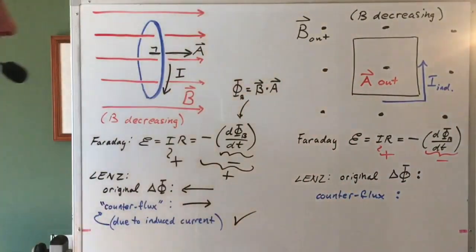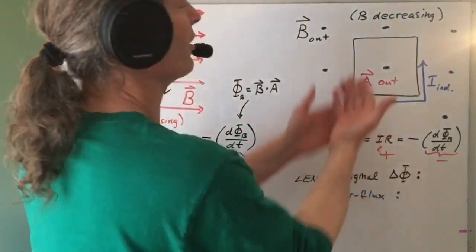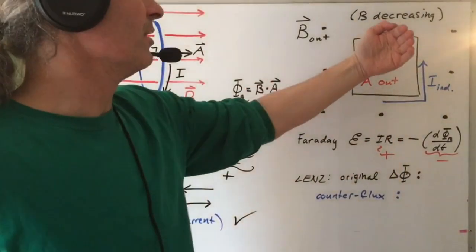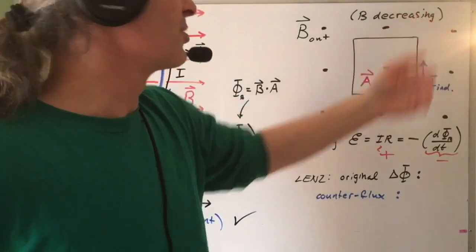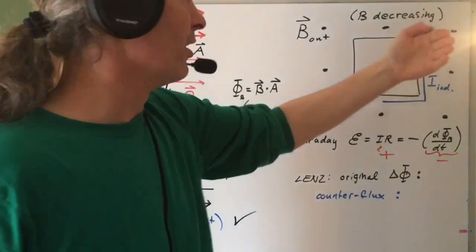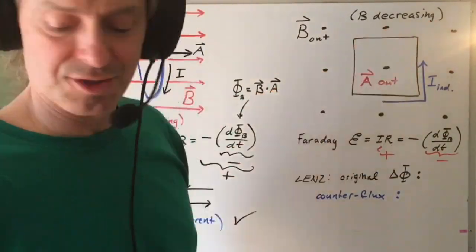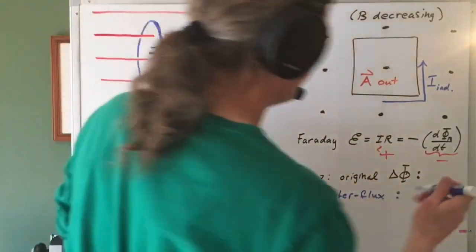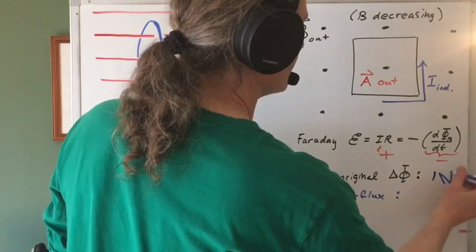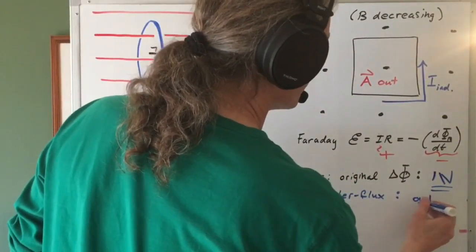Now let's do the Lenz's law analysis. With Lenz's law, we're concerned with whether the change in flux is out through the loop or into the loop. We have a magnetic field coming out of the loop, so the flux is out, but the magnetic field is decreasing. So I start with outward flux, but then I end up with less outward flux. So the change in flux is inward — into the board.